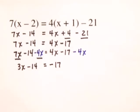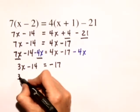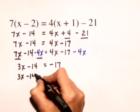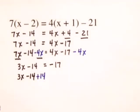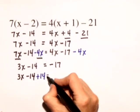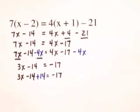Next, we're going to add 14 to both sides of this equation and we'll have 3x minus 14 plus 14 is equal to negative 17 plus 14.